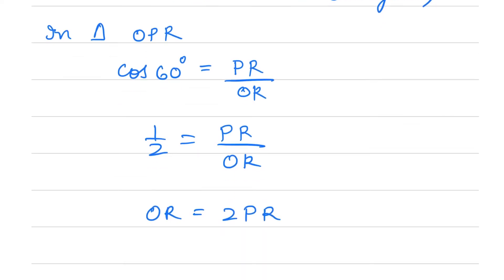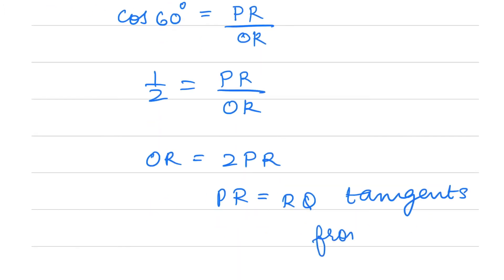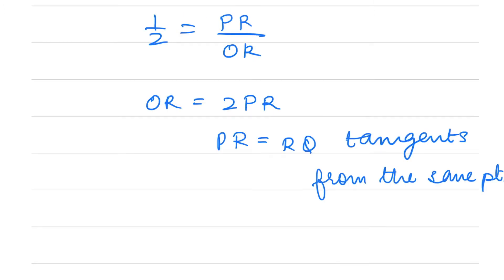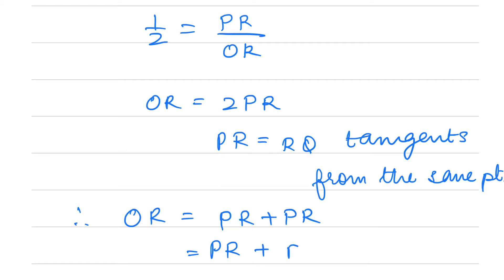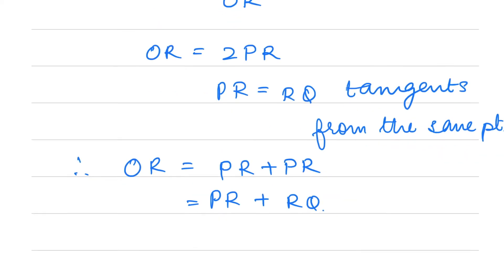We already know that PR equals RQ, since tangents from the same external point are equal. Therefore OR can be written as PR plus PR, which is also PR plus RQ. Hence proved.